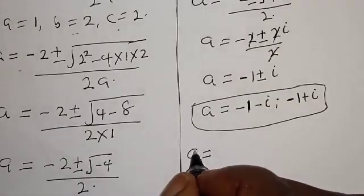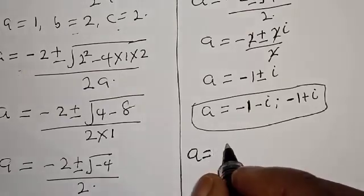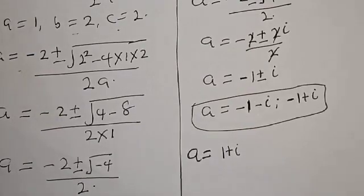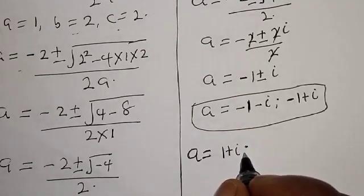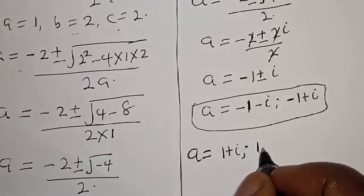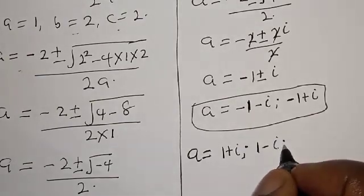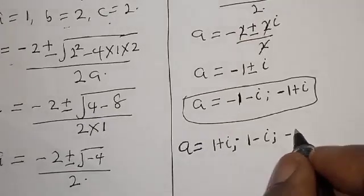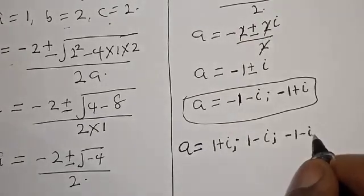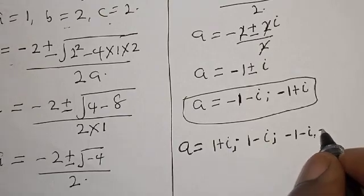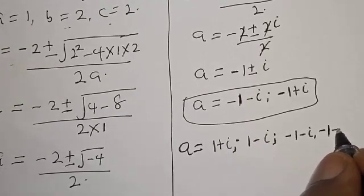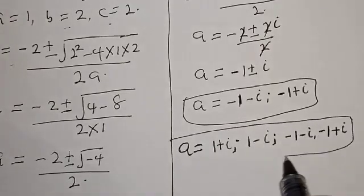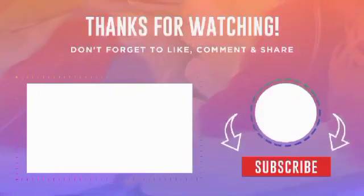Therefore, the roots of this equation are: a is equal to 1 plus i, then 1 minus i, then minus 1 minus i, then minus 1 plus i. If you have enjoyed the class, please don't forget to like, share, comment and subscribe. Thank you.